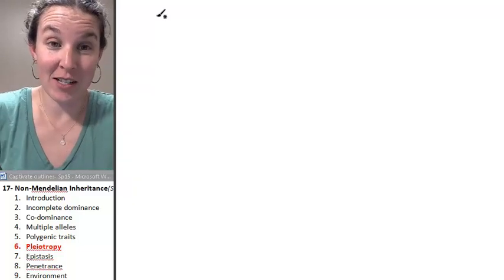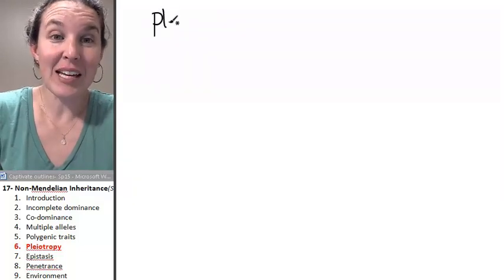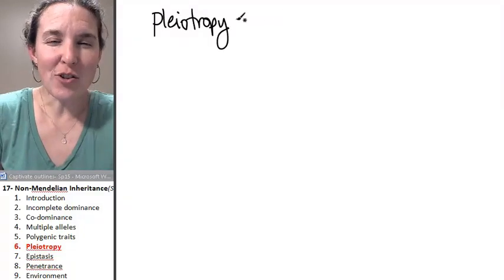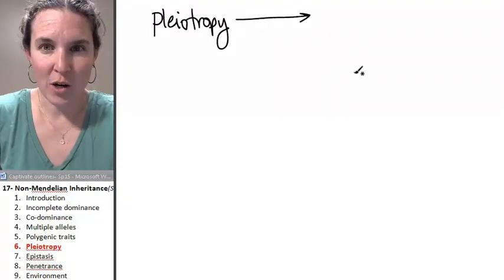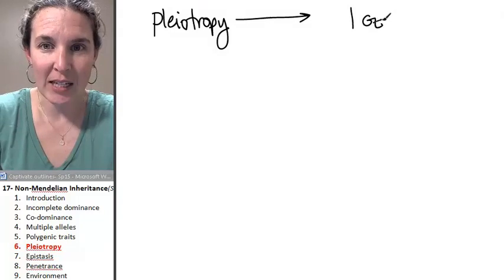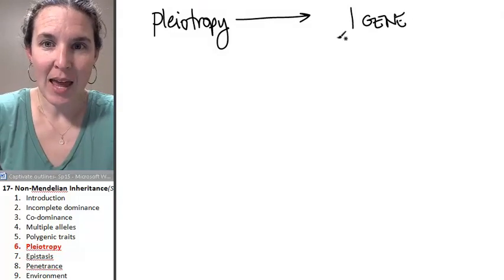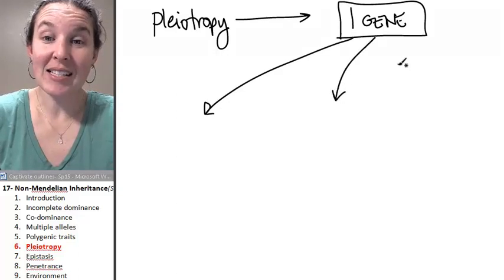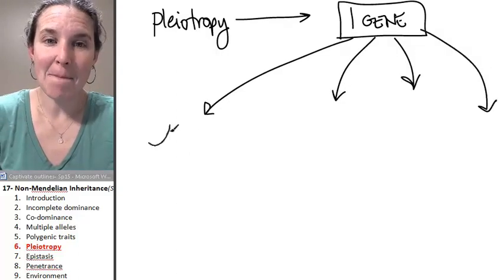All right, you ready for this one? Pleiotropy. Pleiotropy is a situation where you have one gene and somehow that single gene affects many traits.